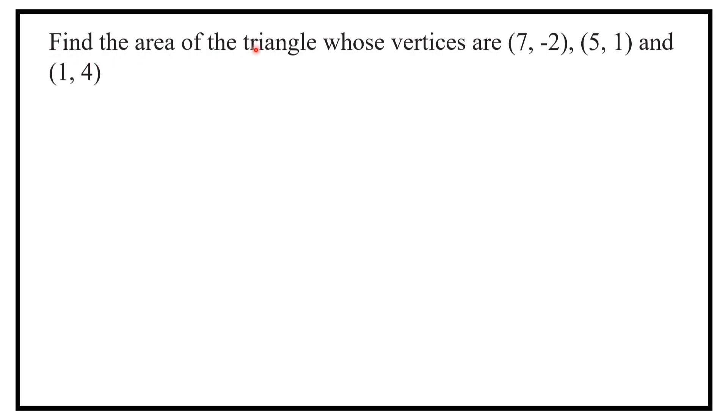Find the area of the triangle whose vertices are (7, -2), (5, 1), and (1, 4).